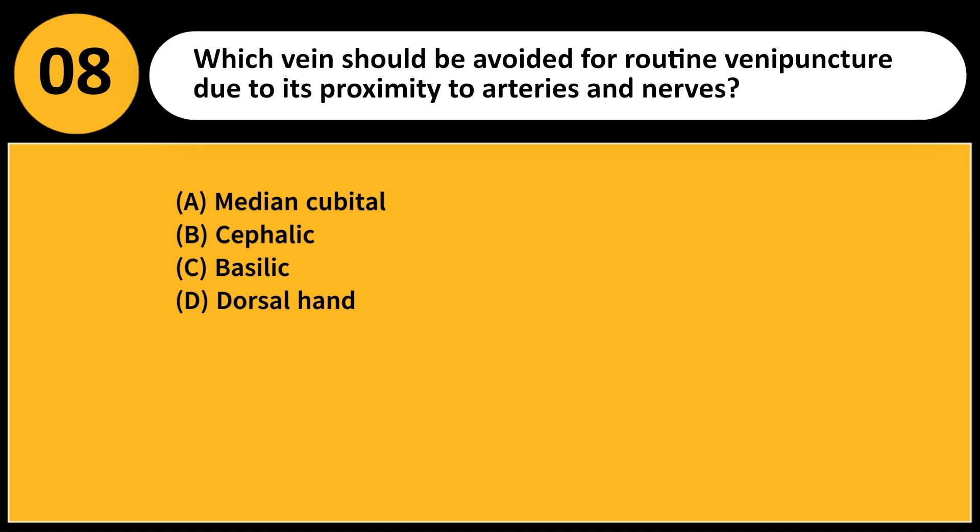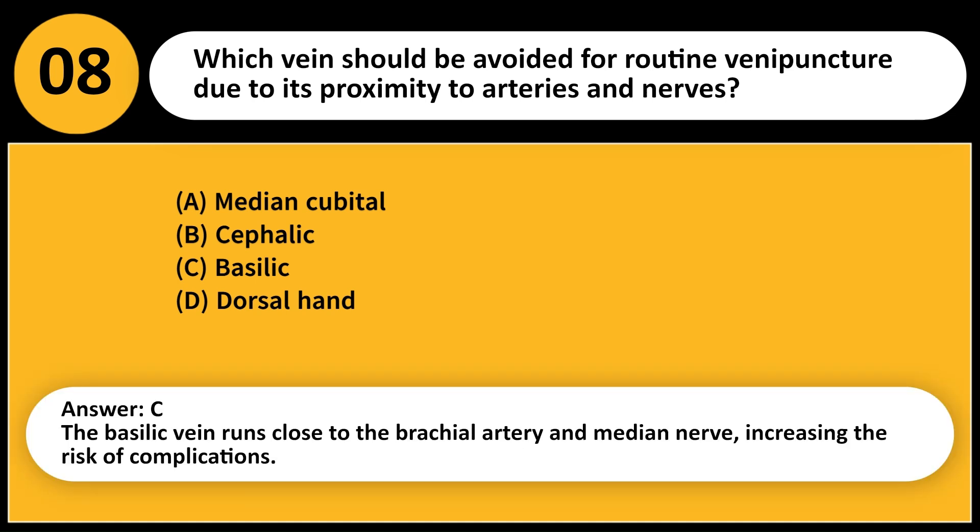Which vein should be avoided for routine venipuncture due to its proximity to arteries and nerves? A. Median cubital. B. Cephalic. C. Basilic. D. Dorsal hand. Answer: C. The basilic vein runs close to the brachial artery and median nerve, increasing the risk of complications.